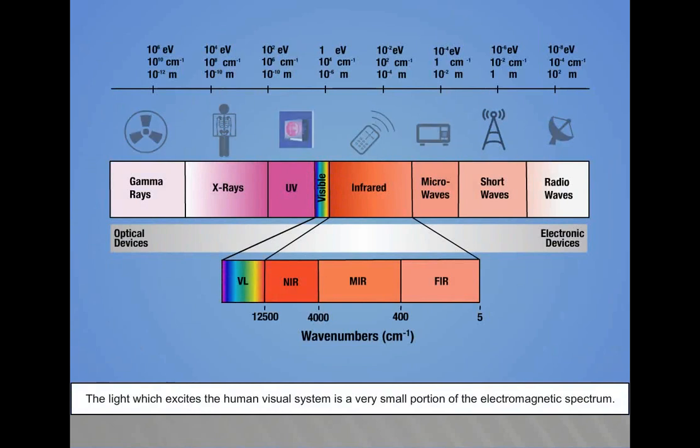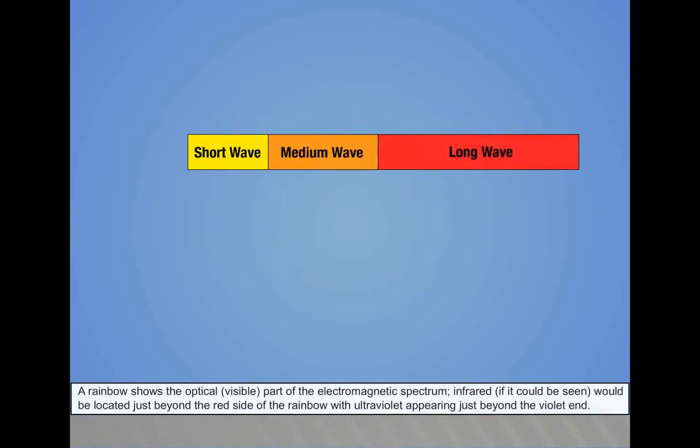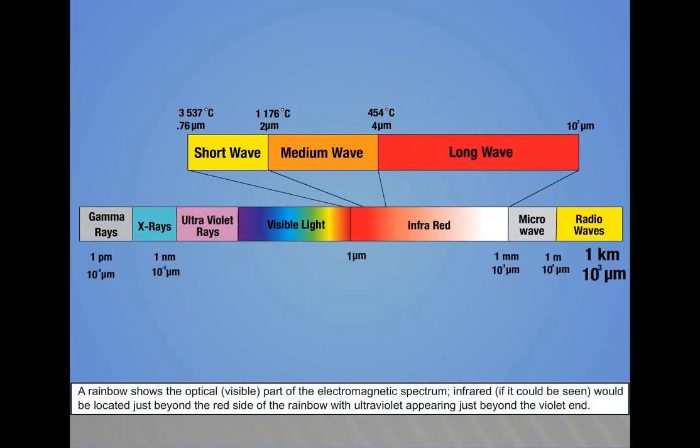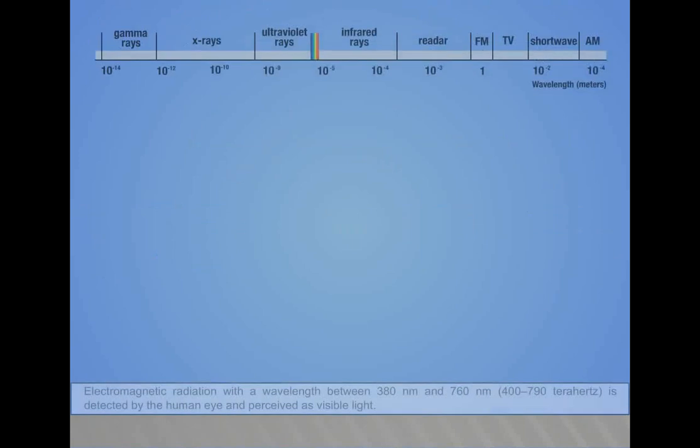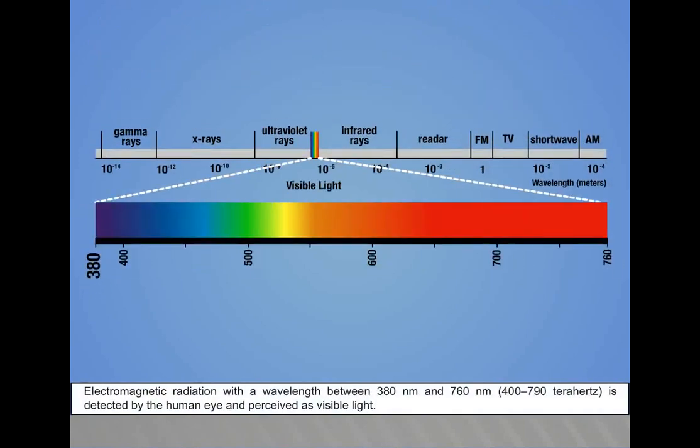The light which excites the human visual system is a very small portion of the electromagnetic spectrum. A rainbow shows the optical visible part of the electromagnetic spectrum. Infrared, if it could be seen, would be located just beyond the red side of the rainbow, with ultraviolet appearing just beyond the violet end.